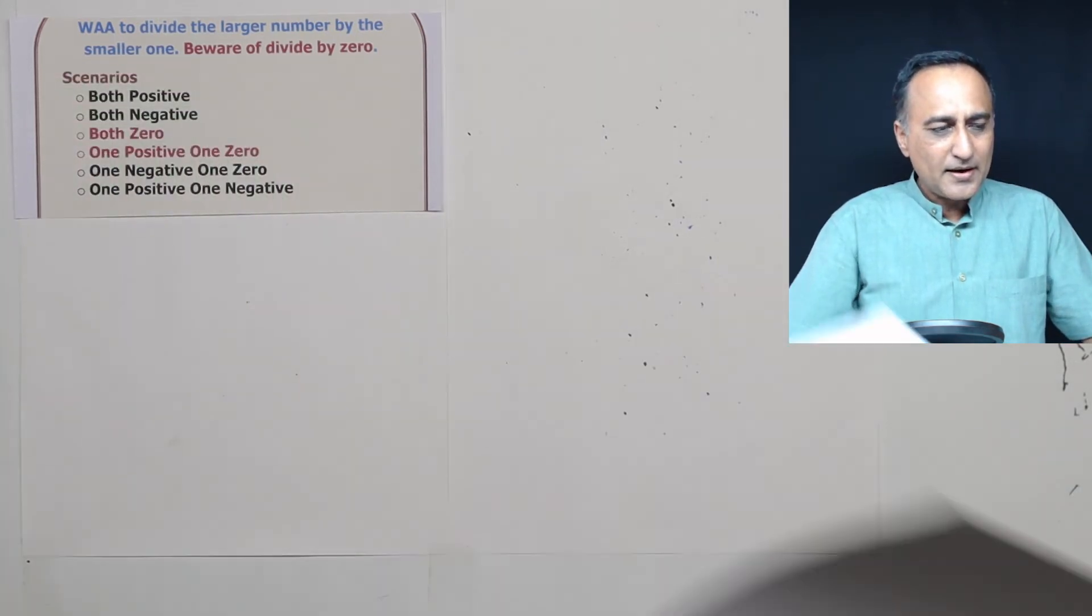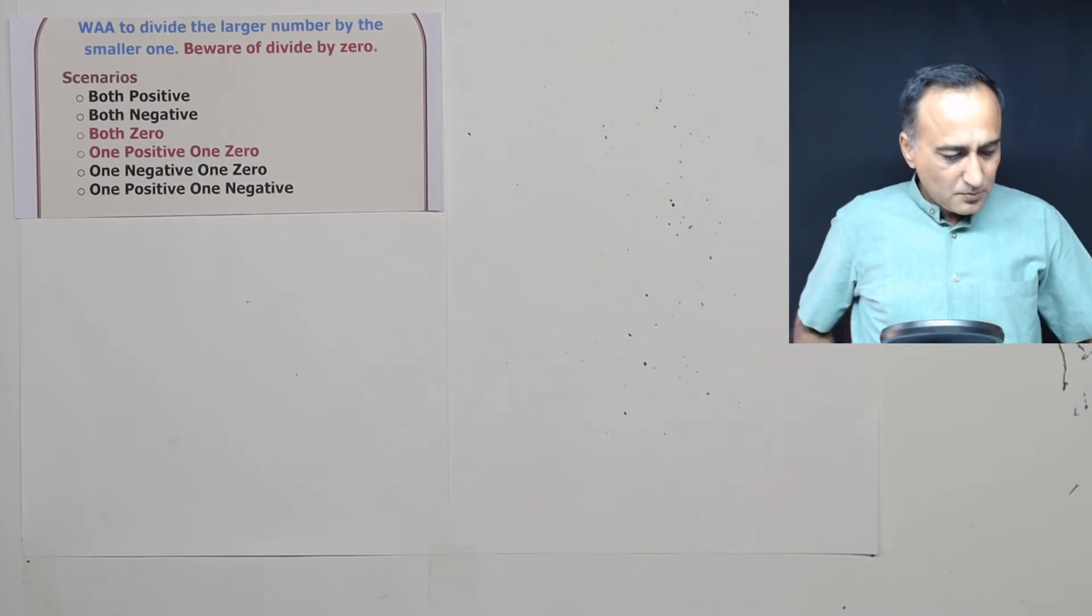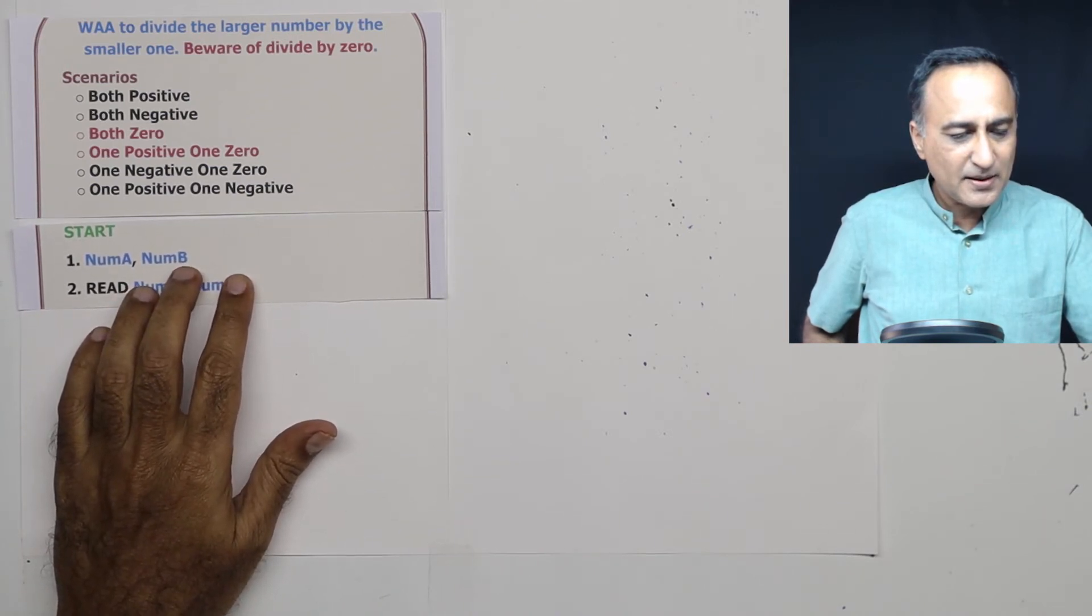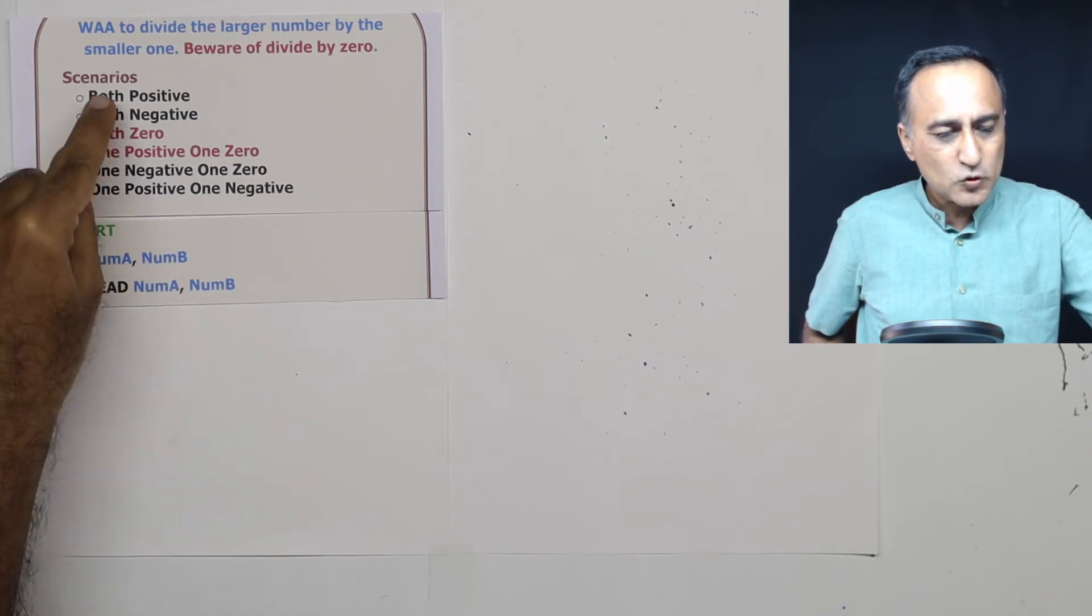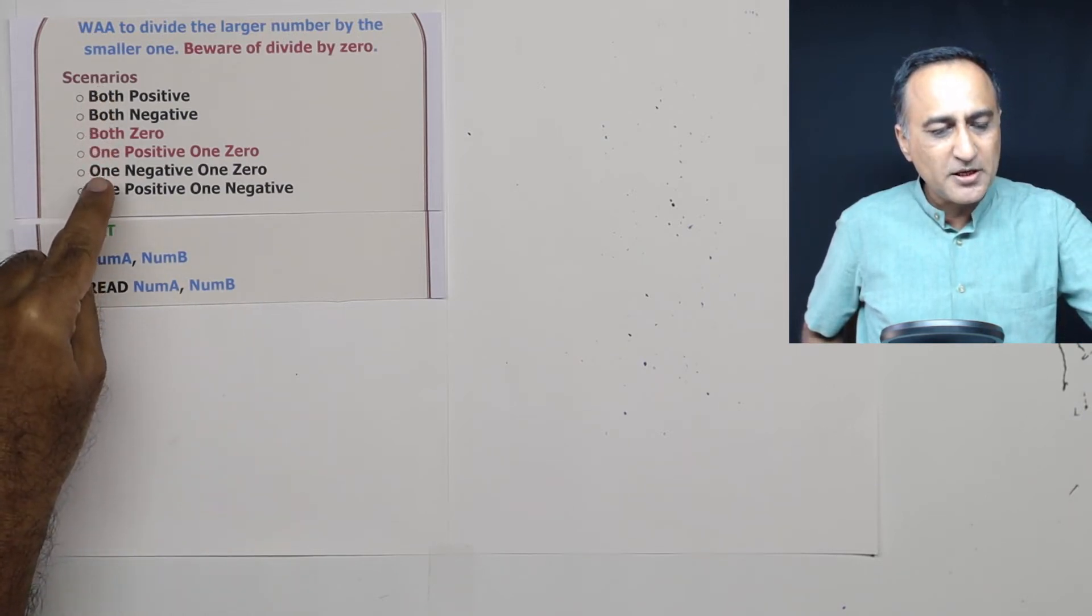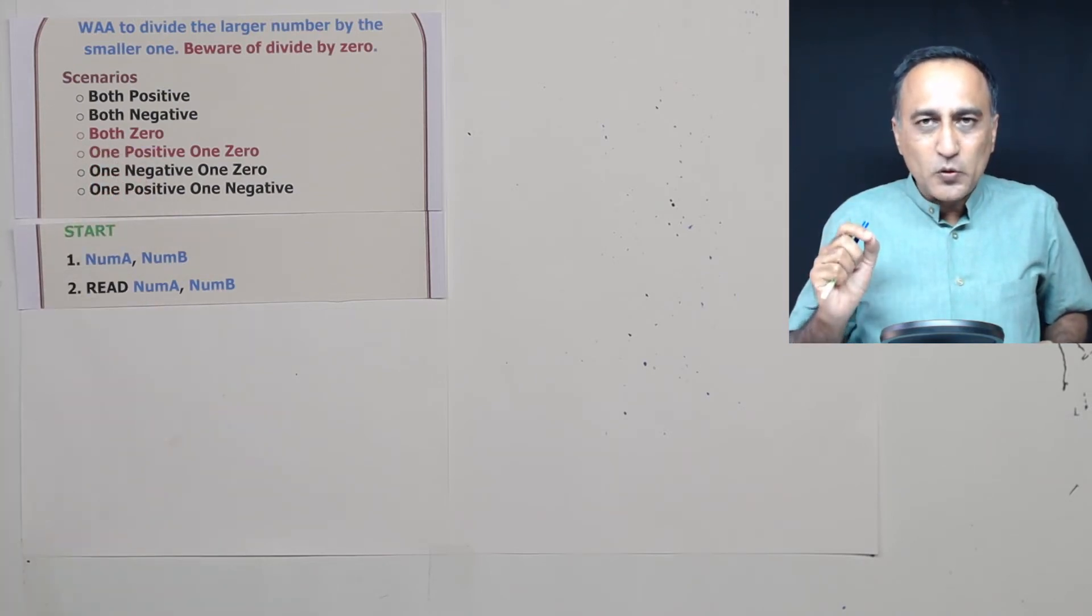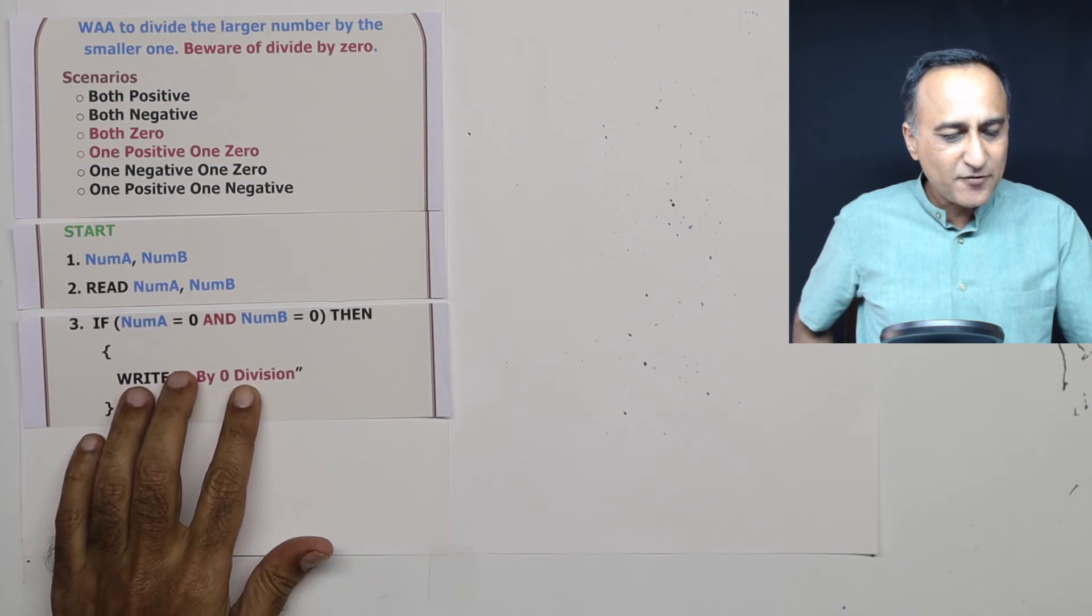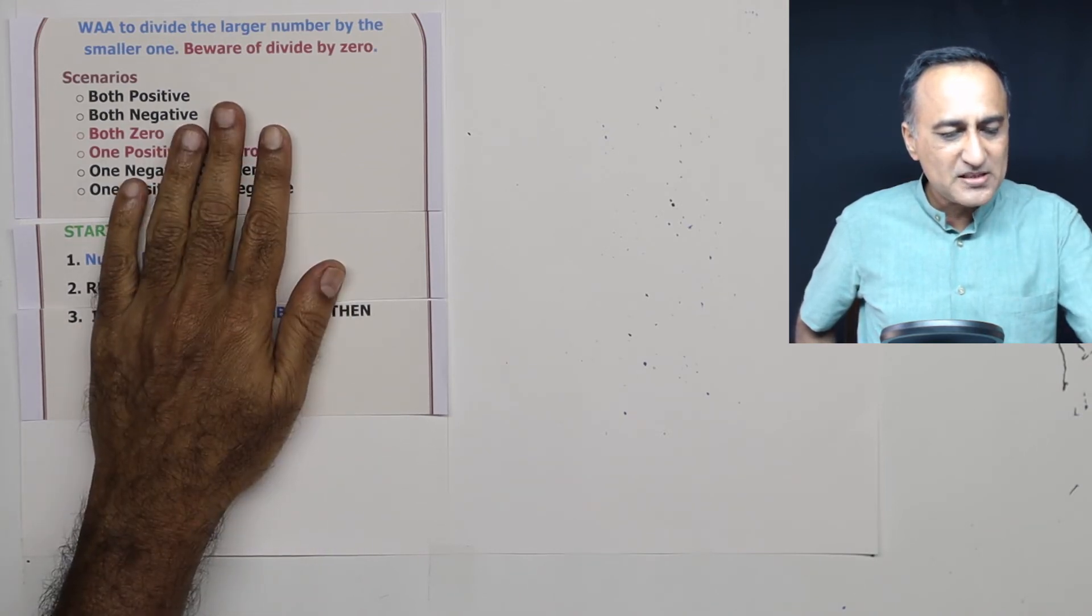So let's try to go ahead and proceed to write the logic. So the first step is we are going to write start number A, number B and read number A and number B. So here I have shown you all the possible input values and the ones in red indicate the problem input values we need to give special attention to.